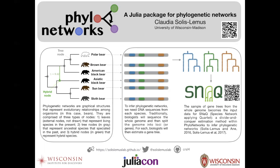And third, the hybrid nodes here in green represent hybrid species. There is an arrow in green that represents some form of gene flow or hybridization event from some ancestral population in the past into the ancestor of the Asiatic bear.